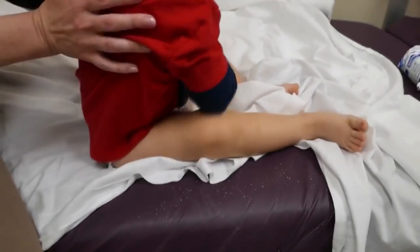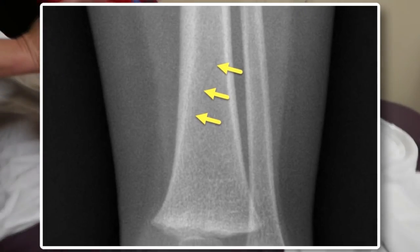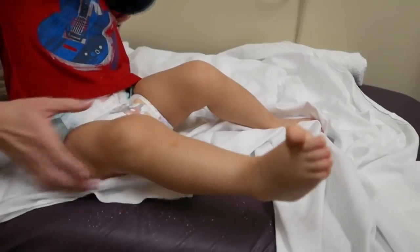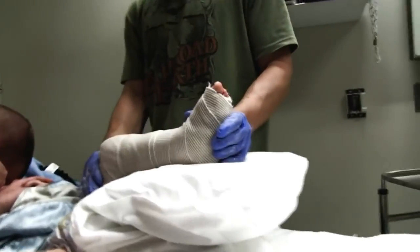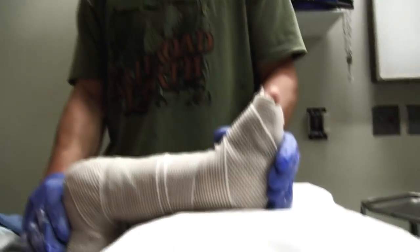Looking at the x-ray, he's got a very fine distal tibial spiral fracture, which we're thinking is like a toddler's fracture — a subset of a childhood accidental spiral tibial fracture. It looks like we're just putting a cast on there.